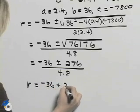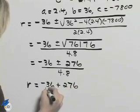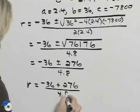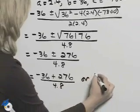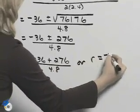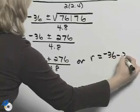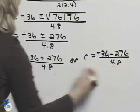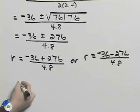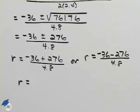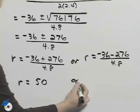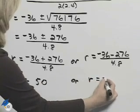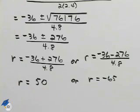Now we can break this up into R equal to negative 36 plus 276 divided by 4.8, or R is equal to negative 36 minus 276 divided by 4.8. Using a calculator, we'll get R is 50 for the first expression, or R is negative 65 for the second.